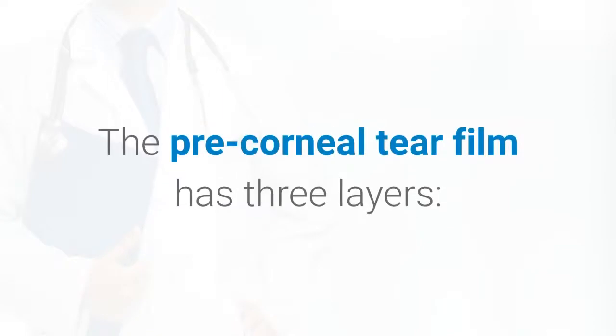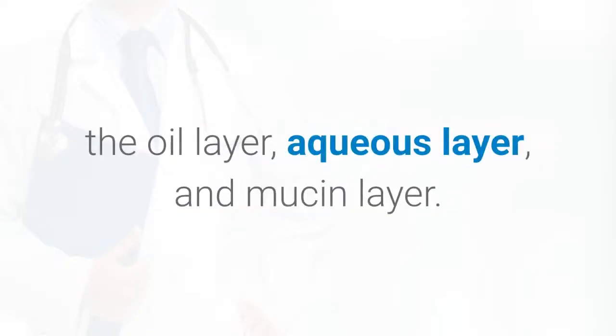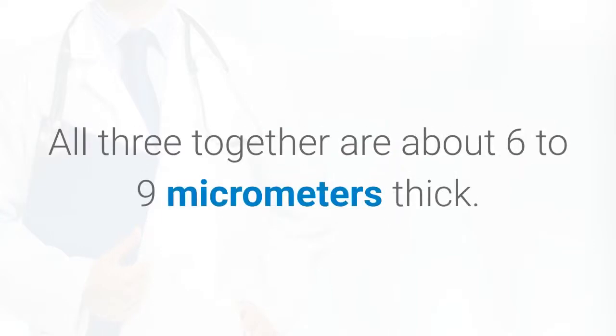The precorneal tear film has three layers: the oil layer, aqueous layer, and mucin layer. All three together are about 6 to 9 micrometers thick.